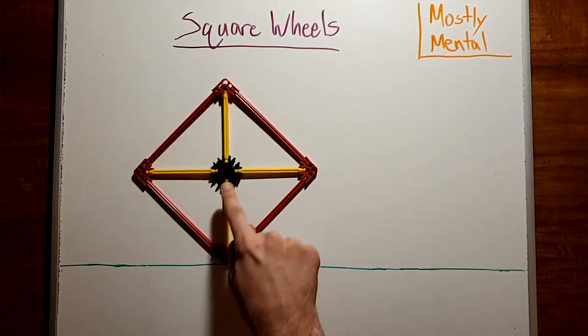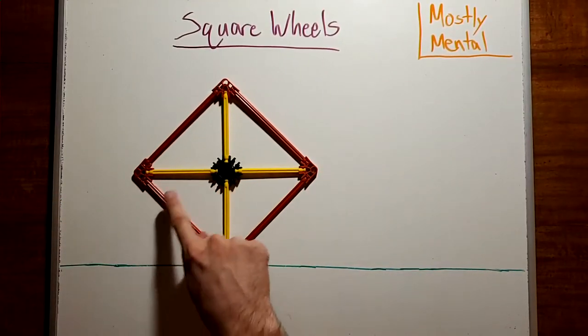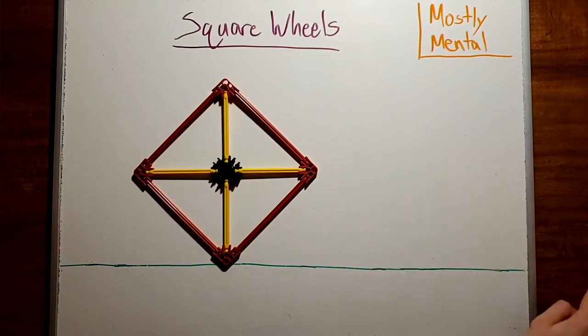And in fact, if we trace out the path the center follows, we're going to get a series of quarter-circular arcs. That's not going to be a smooth ride at all.